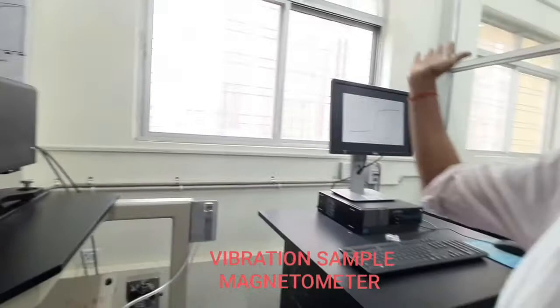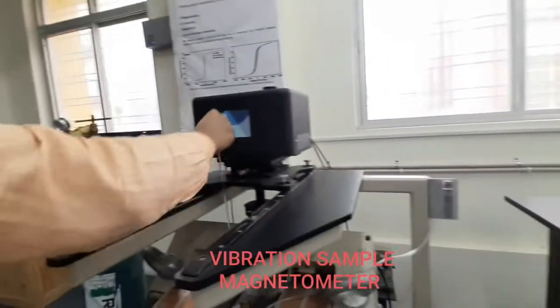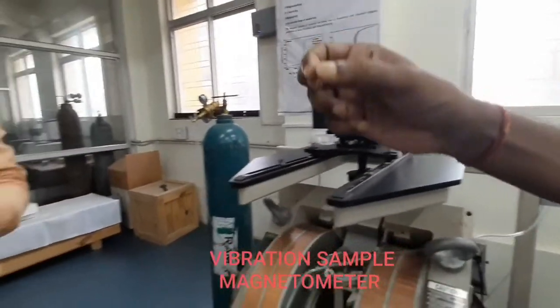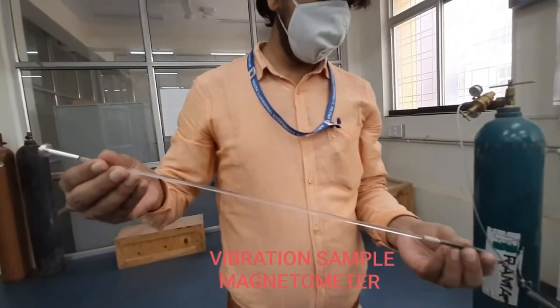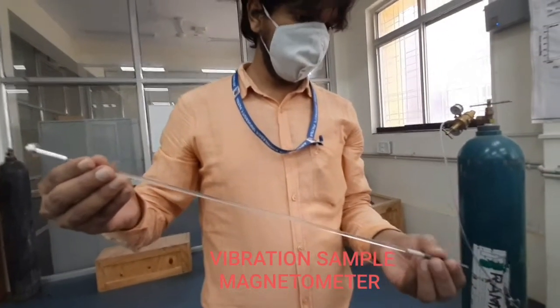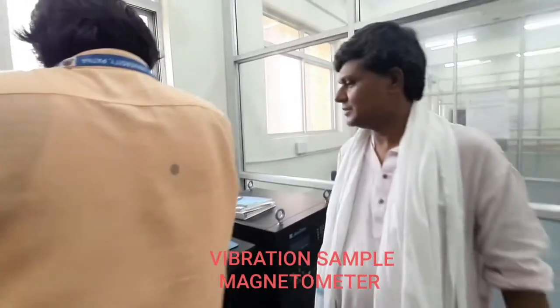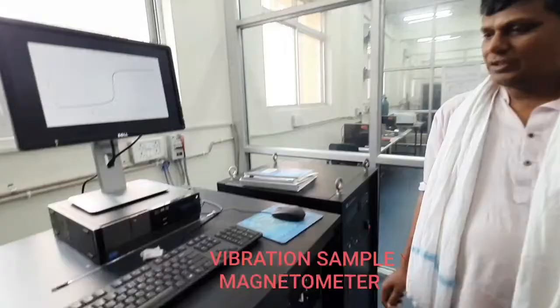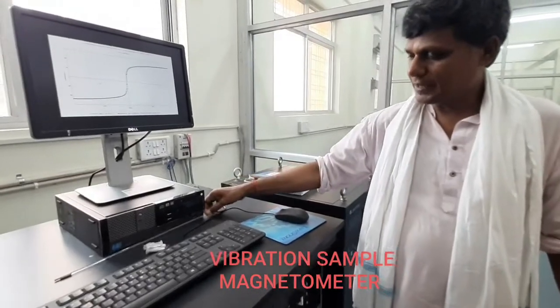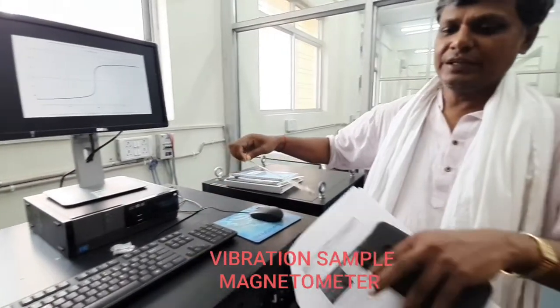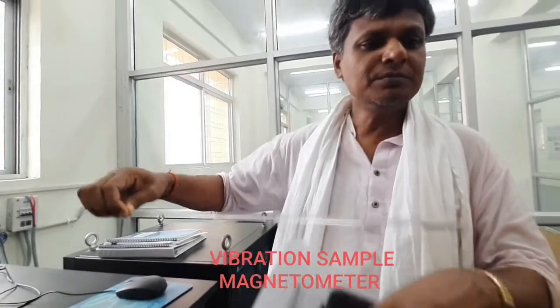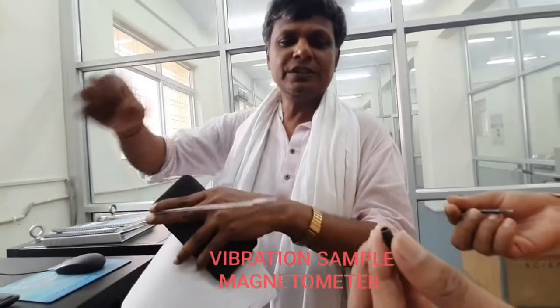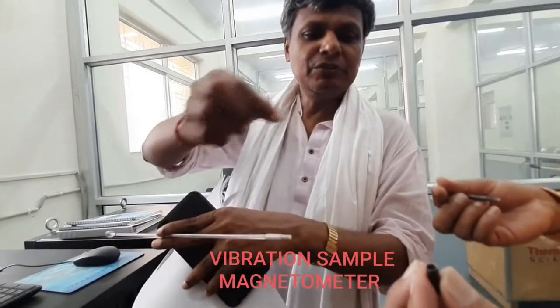Where we can see the results. Now first, this is the sample holder. In this sample holder, you put the samples in powder form. You can see the sample holder, in this sample we have just put the sample.